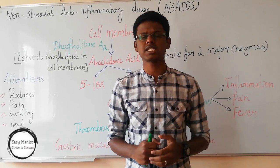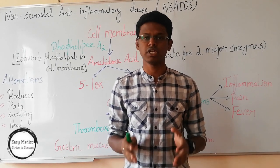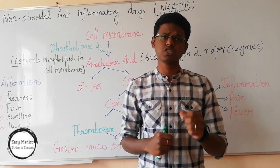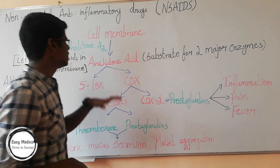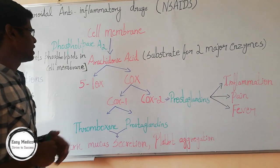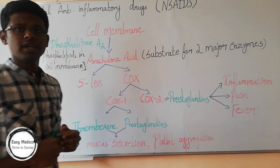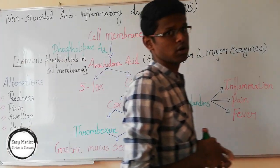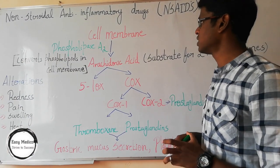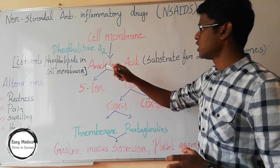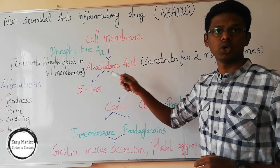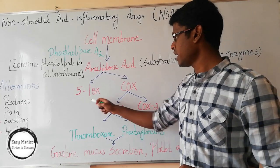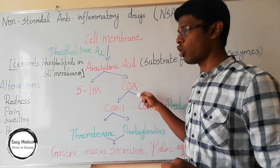First of all, in order to understand these things, we should know what happens during inflammation. Let's zoom into the cell membrane. The enzyme which is helpful in conversion of phospholipids in the cell membrane is phospholipase A2. This phospholipase A2 converts phospholipids into arachidonic acid, which is a substrate for two major enzymes: LOX and COX enzymes.